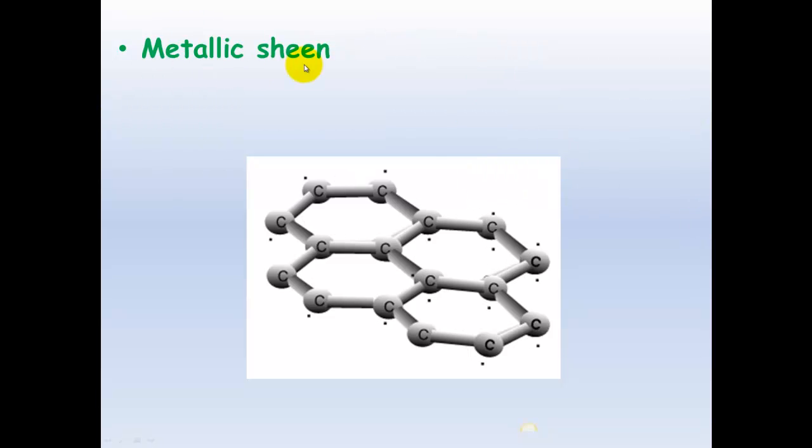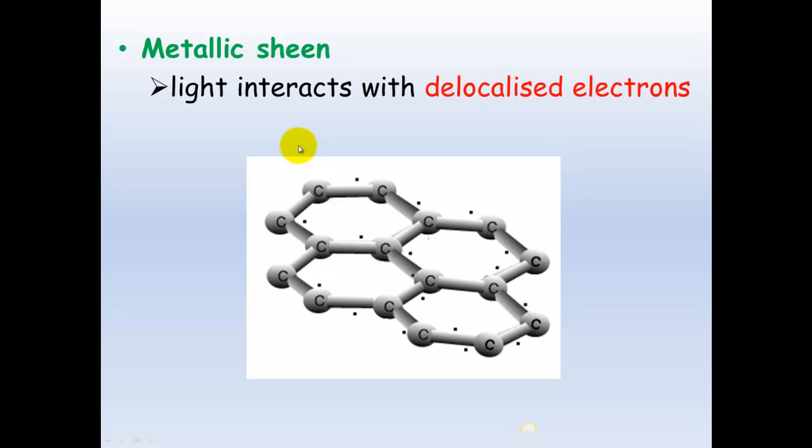Graphite also has a metallic sheen. It has a delocalized electron and those delocalized electrons can reflect light. Remember, metals are shiny or lustrous because they have a delocalized electron, which reflects light. Well, graphite's the same. The delocalized electron can reflect light.